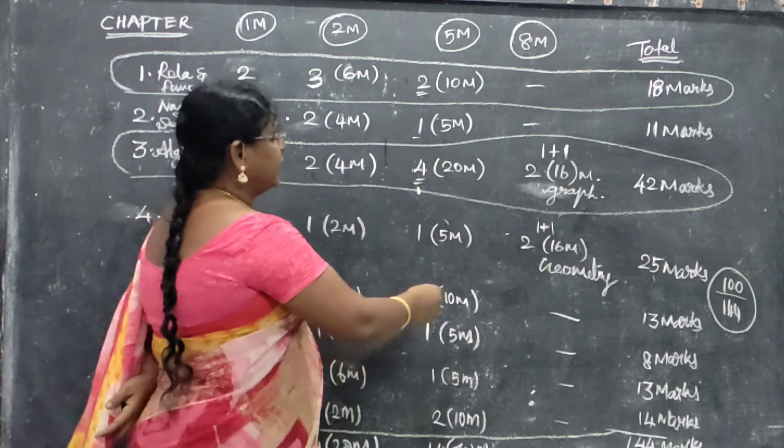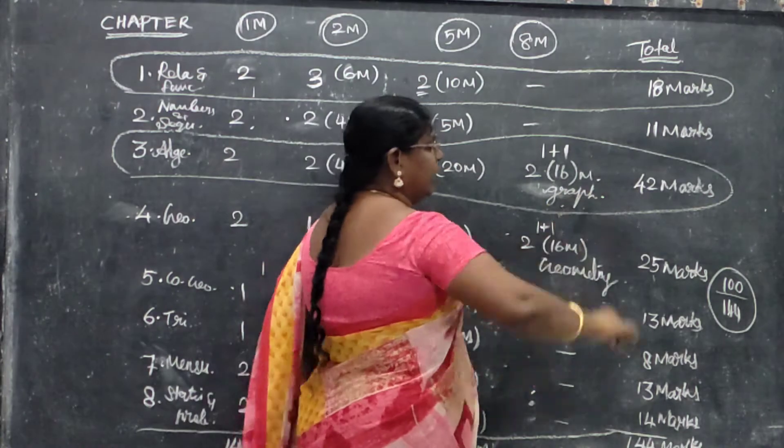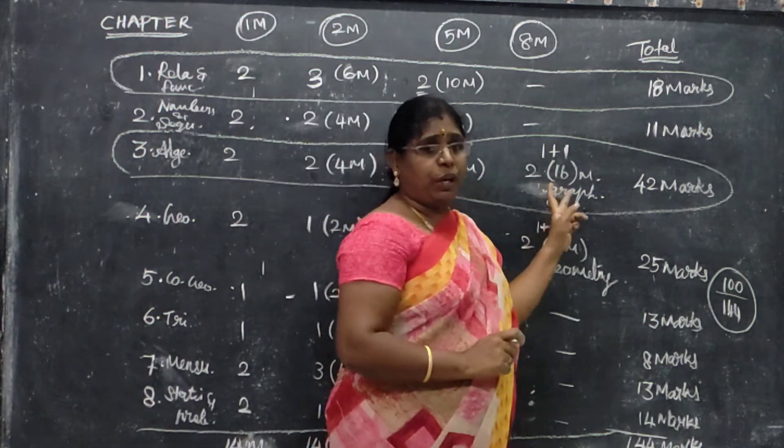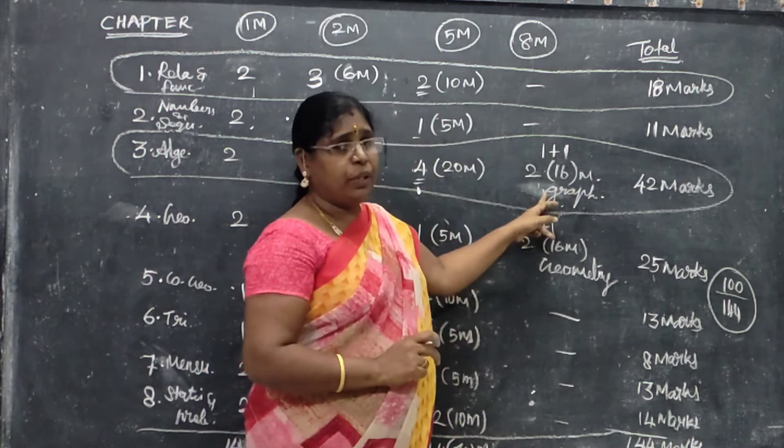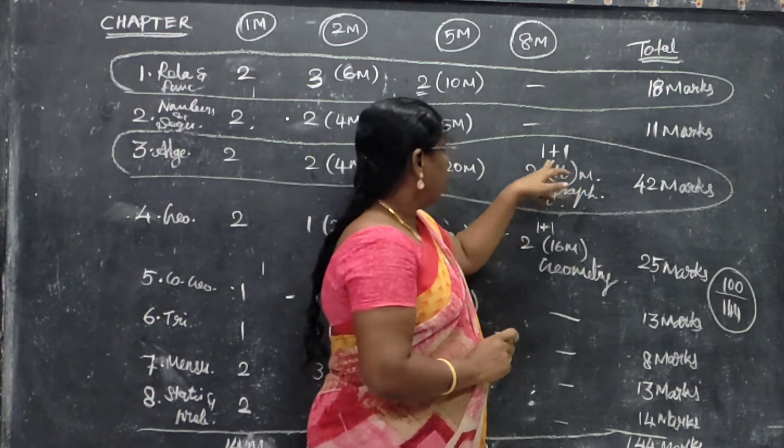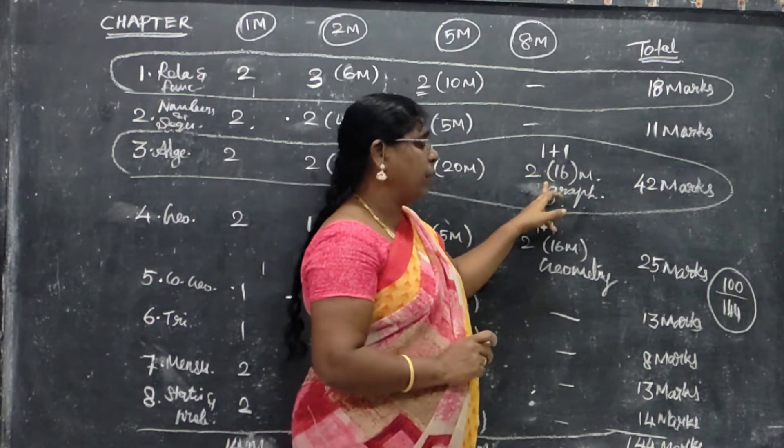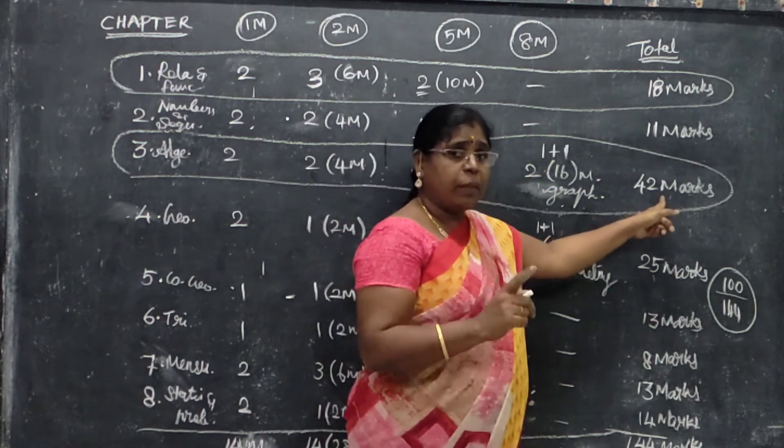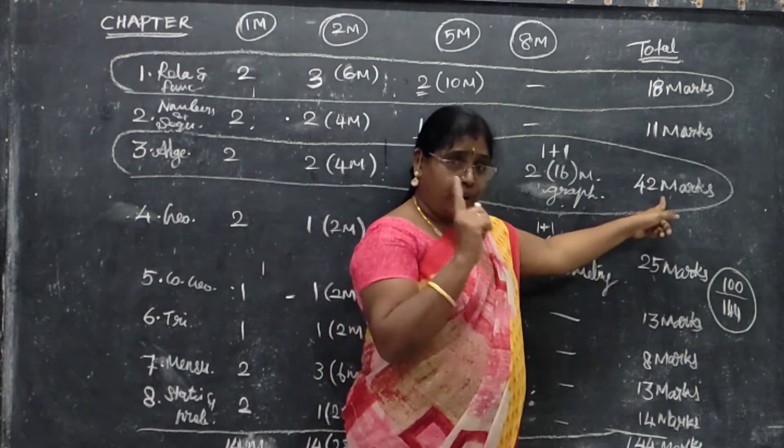In the third chapter we will have a graph, here are 2 graphs. Here is 1 equation, quadratic equations. In that section we will have a choice, 1 question. 5 ones are 2 graphs. Then in the third chapter we will have to ask them. This is 42 marks.